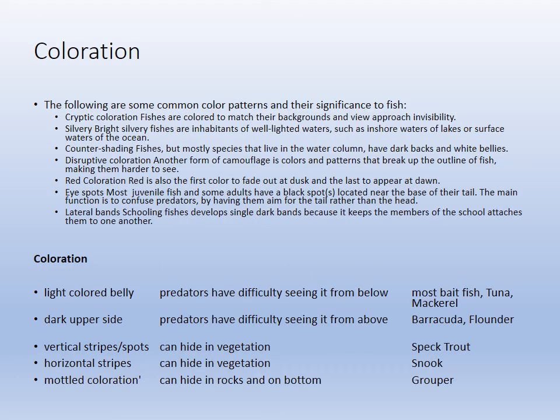Coloration adaptations include counter shading and silver colors, but also cryptic coloration. Red coloration helps at depth because red light fades out first. Stripes, spots, and false eye spots are also adaptive — a predator may attack the false eye spot thinking it's the head when it's actually the tail, allowing prey to escape. The specks on a speckled trout help it blend into the spotty seagrass environment — disruptive coloration.